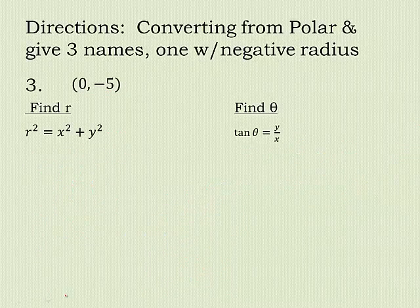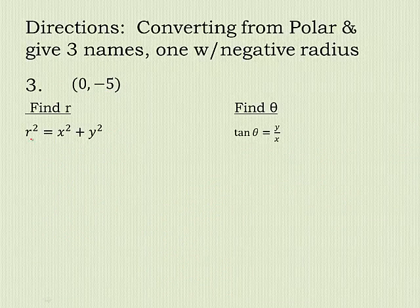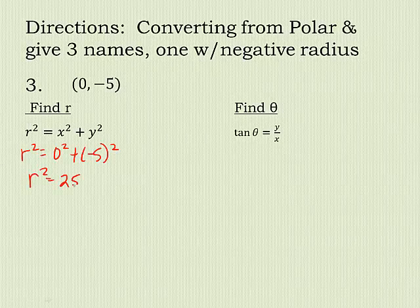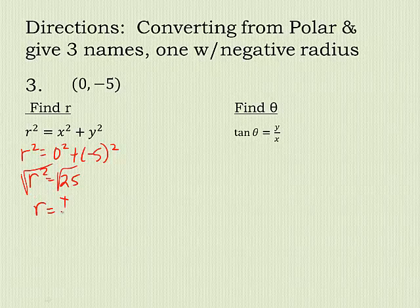Alright, one more. Zero and negative 5. R squared. X is zero. Negative 5 squared. So, r squared is 25. So that means r is the square root. I get plus or minus 5.